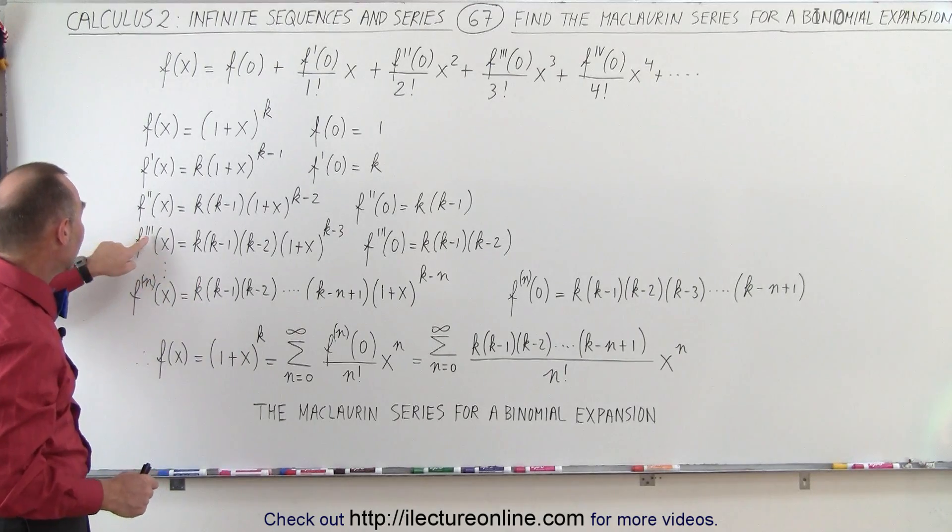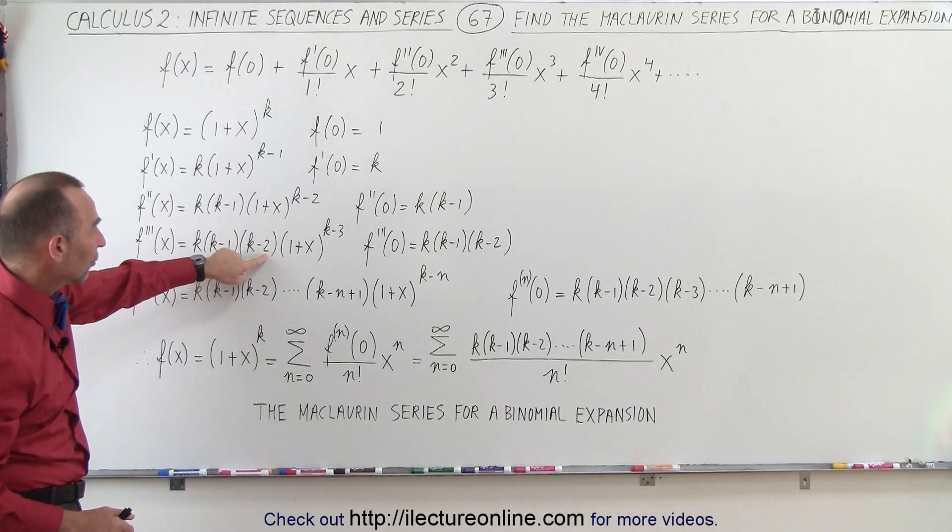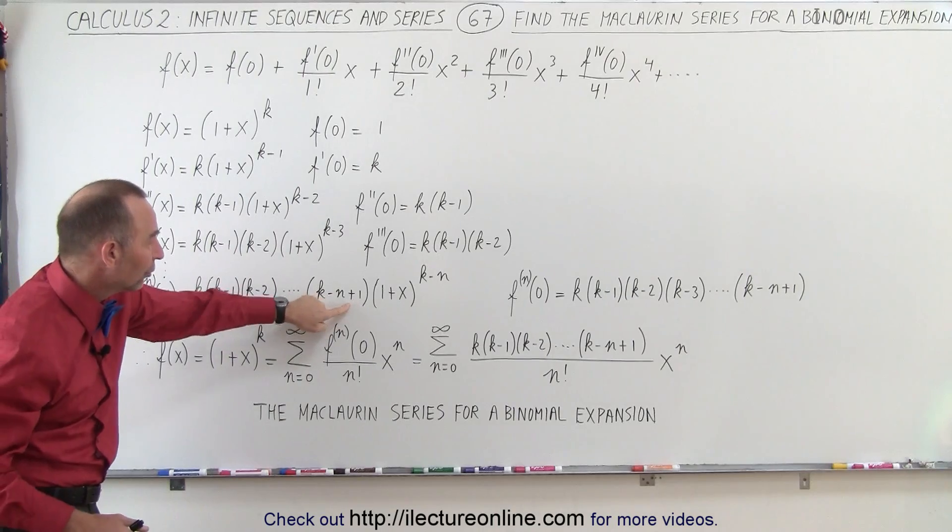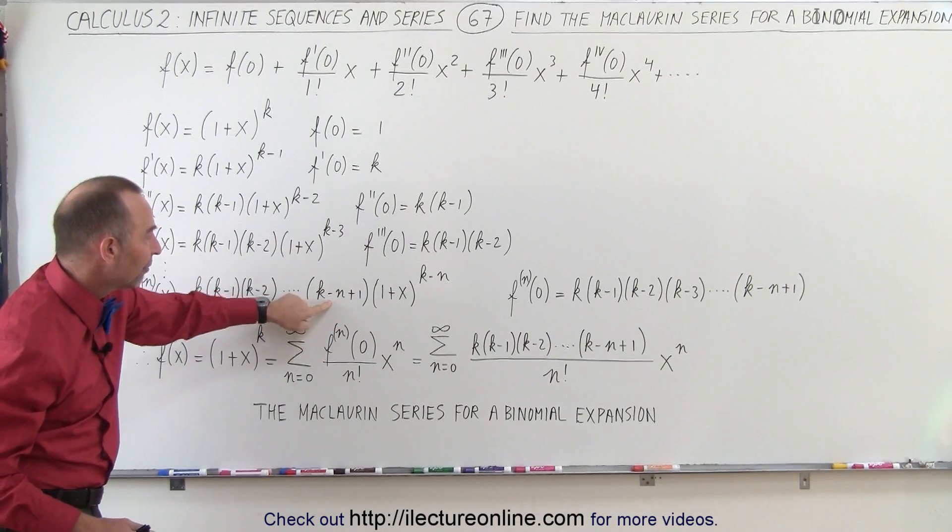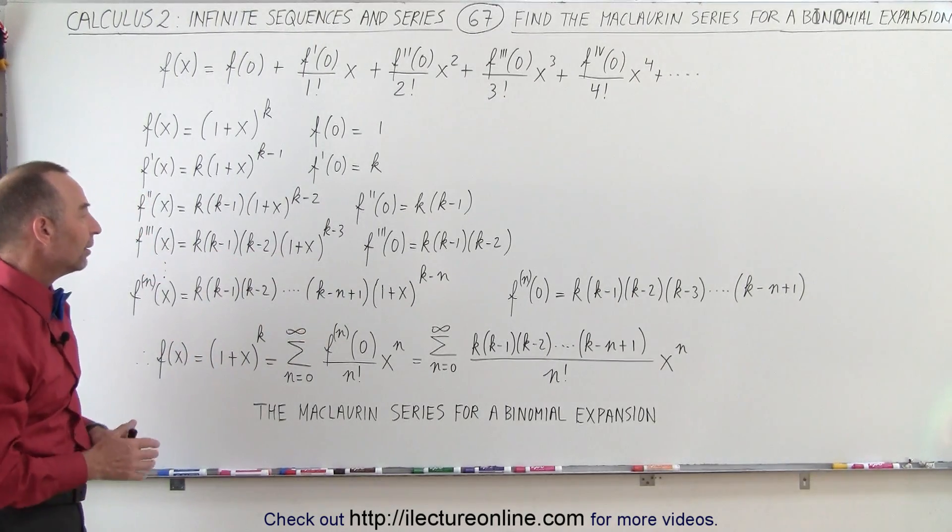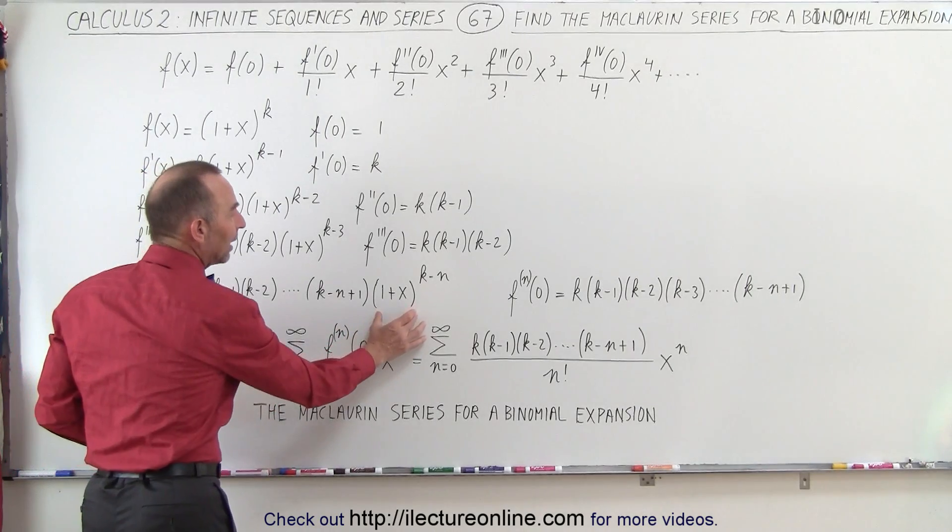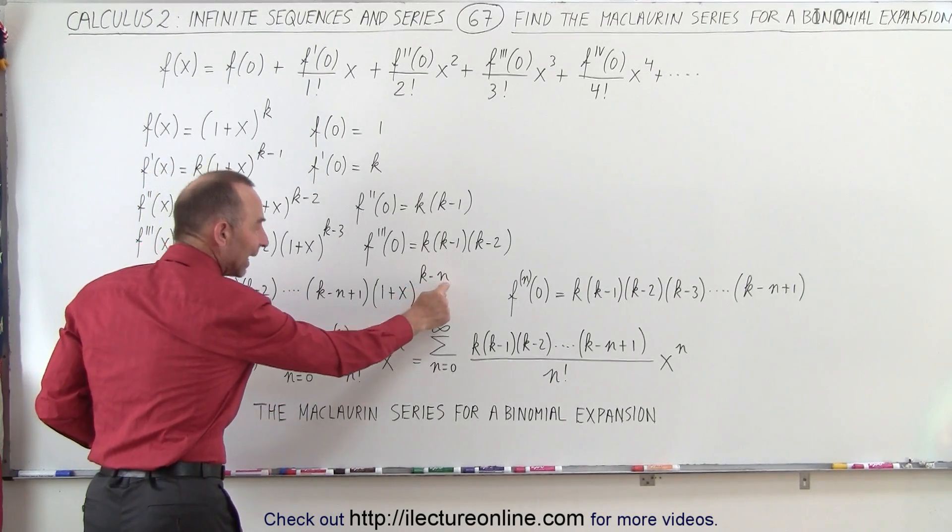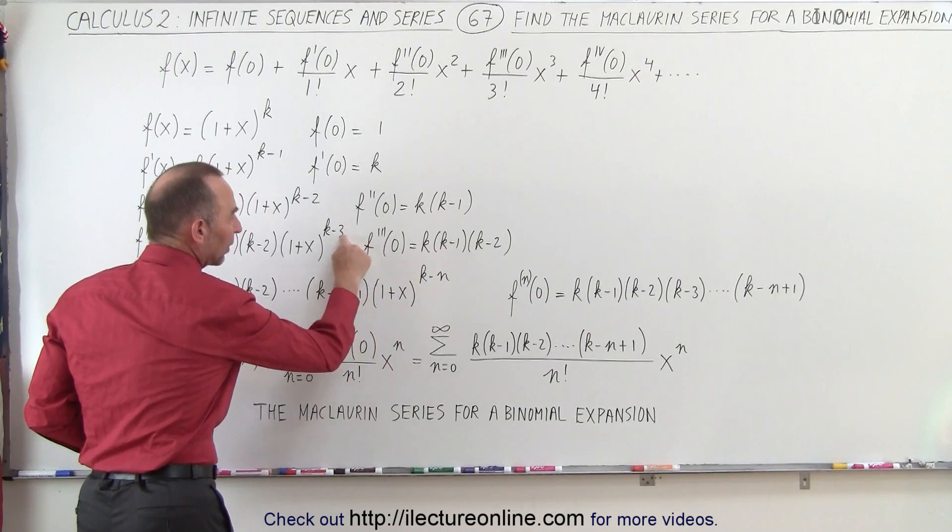ends at k minus n plus 1. Notice that when the derivative here is 3, that the last number here is a minus 2, so we have to add 1 to n. When we subtract n from k to get the correct value there, we still have 1 plus x to the k minus n.